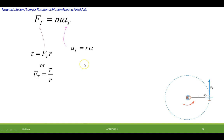So we can make both those substitutions in the original equation. So instead of force tangential we have torque over radius. Instead of acceleration tangential we have r alpha. And we can reduce that down to torque is equal to m r squared times alpha. And this term here has a special name.